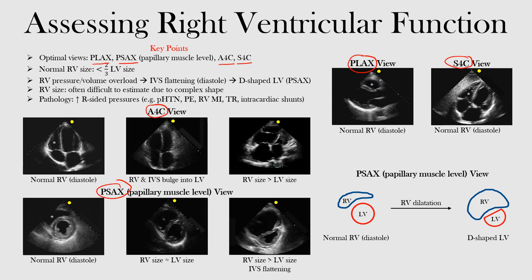Normal right ventricular size is when it's less than two thirds of the left ventricular size. When you're comparing left and right ventricle, the right ventricle should be less than two thirds of the left ventricle in size. Whenever there's an increase in right sided pressures or strain where the right side of the heart has to work harder, whether from pressure or volume overload, this can lead to intraventricular septum flattening.